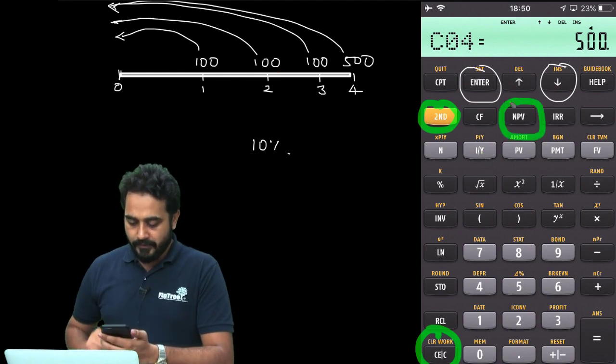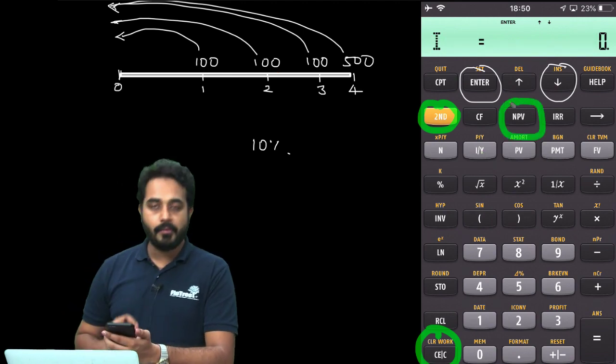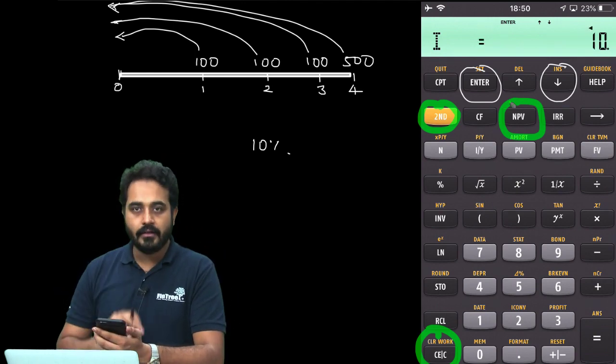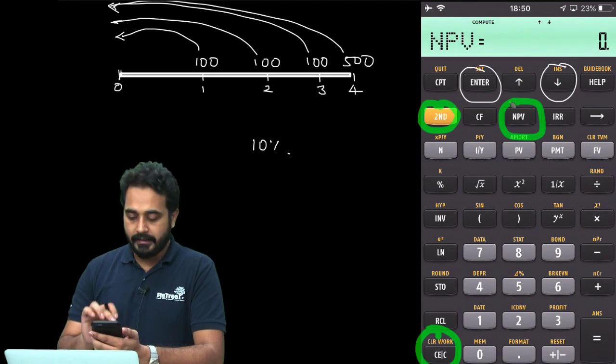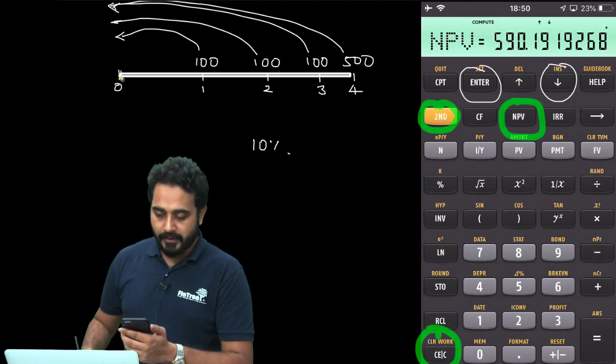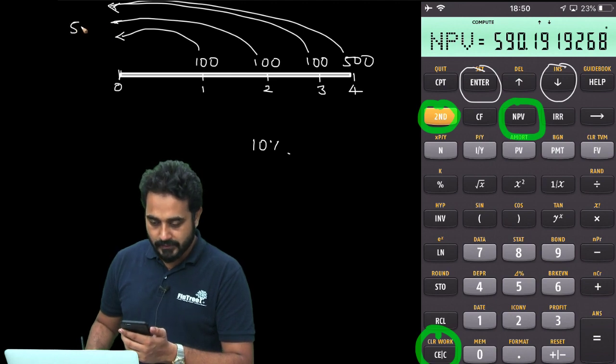So, I am pressing the NPV button here. It will ask me what is your discount rate. I will say 10, enter. Downward arrow and then I will hit the compute button. And it will show me present value of all of these numbers as 590.19.